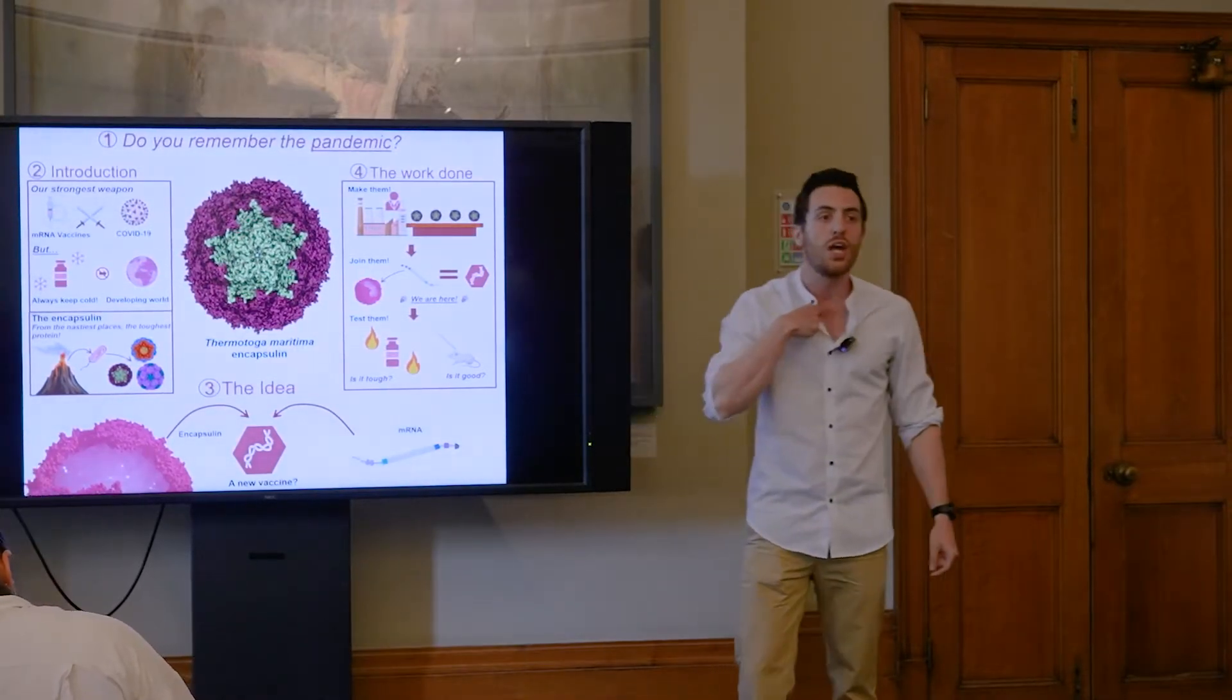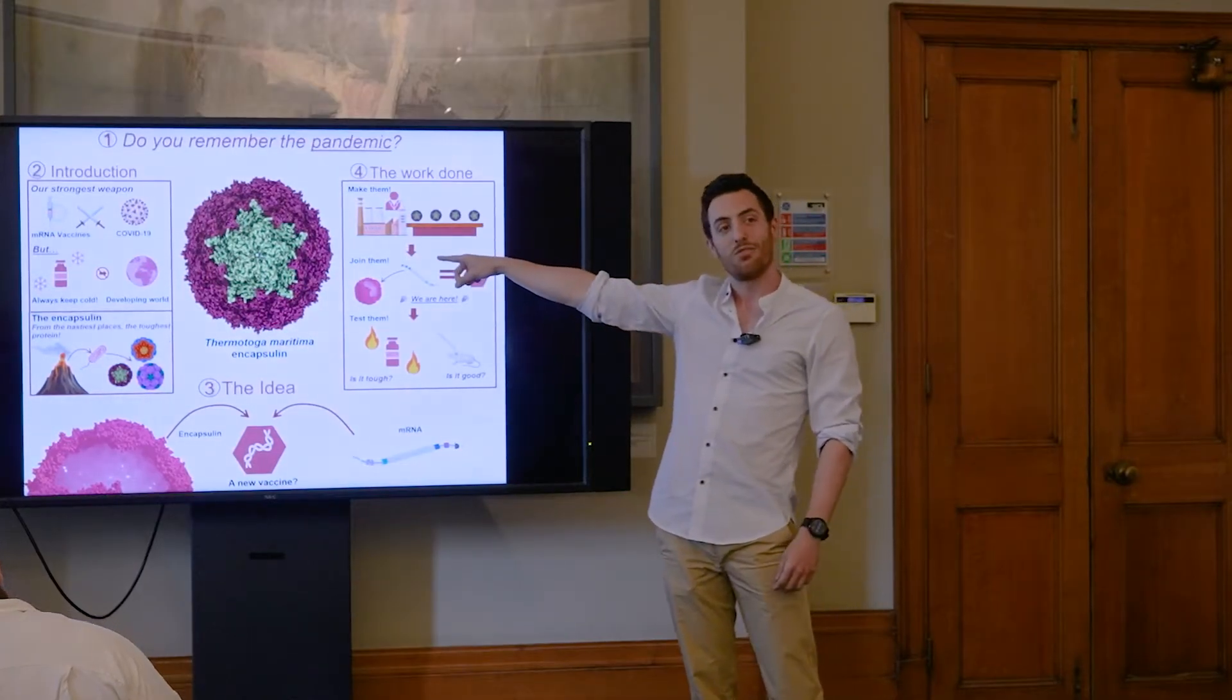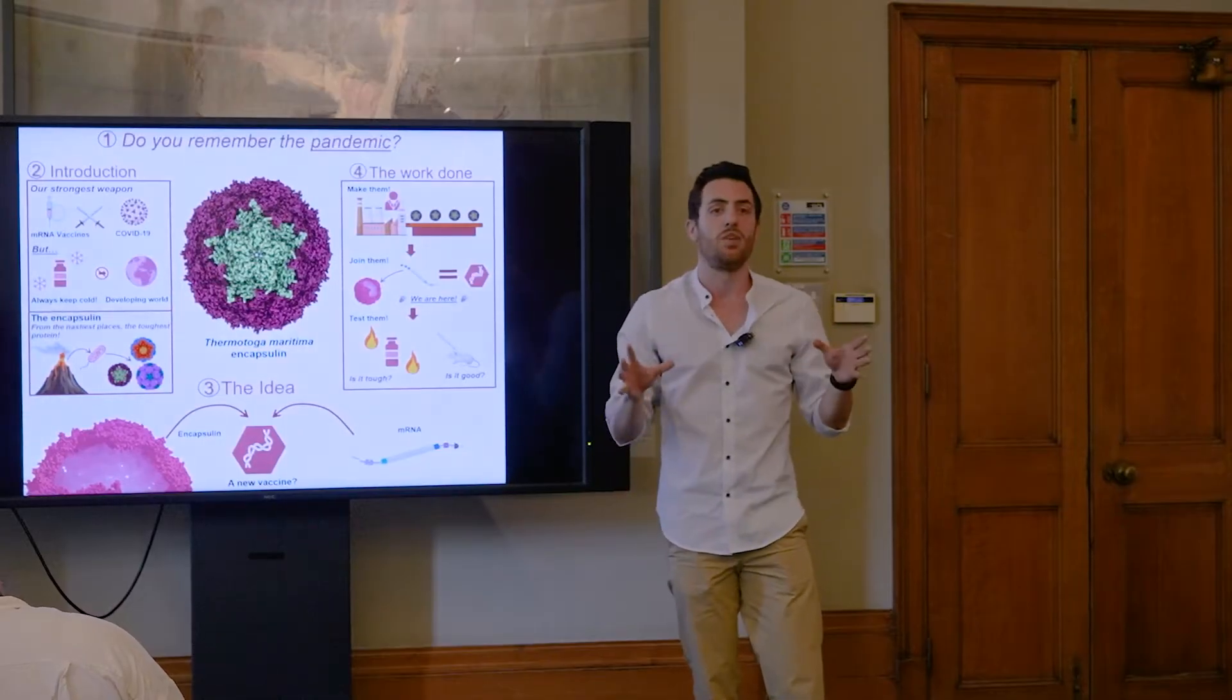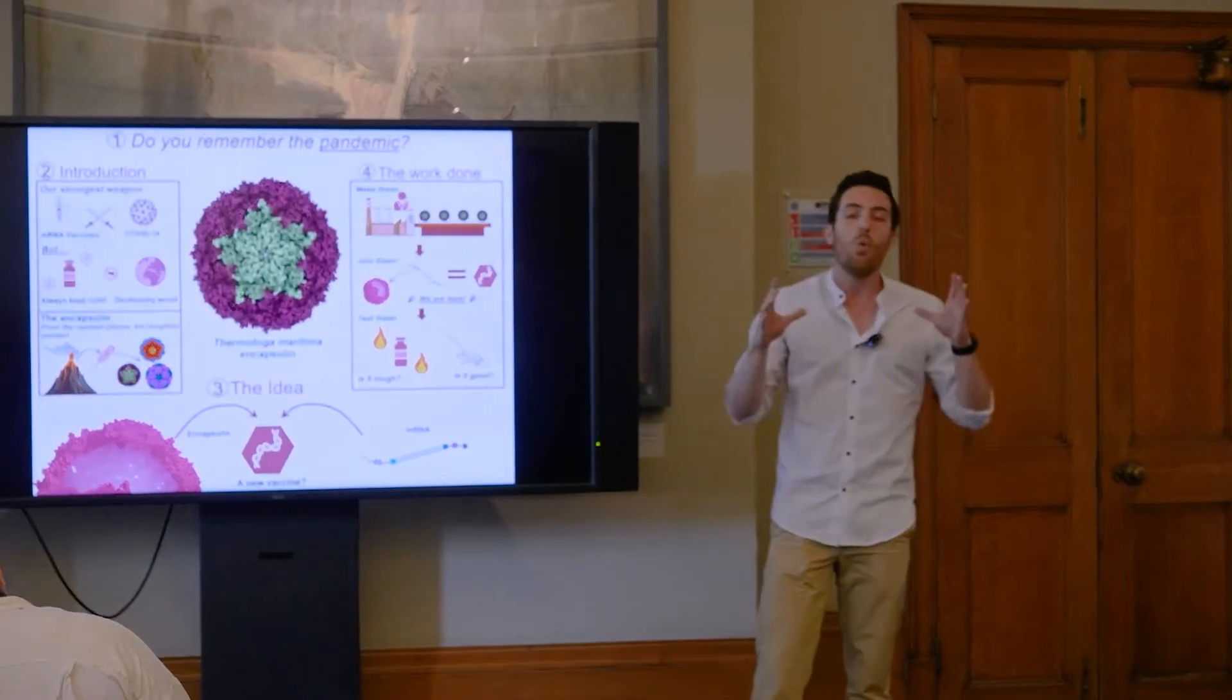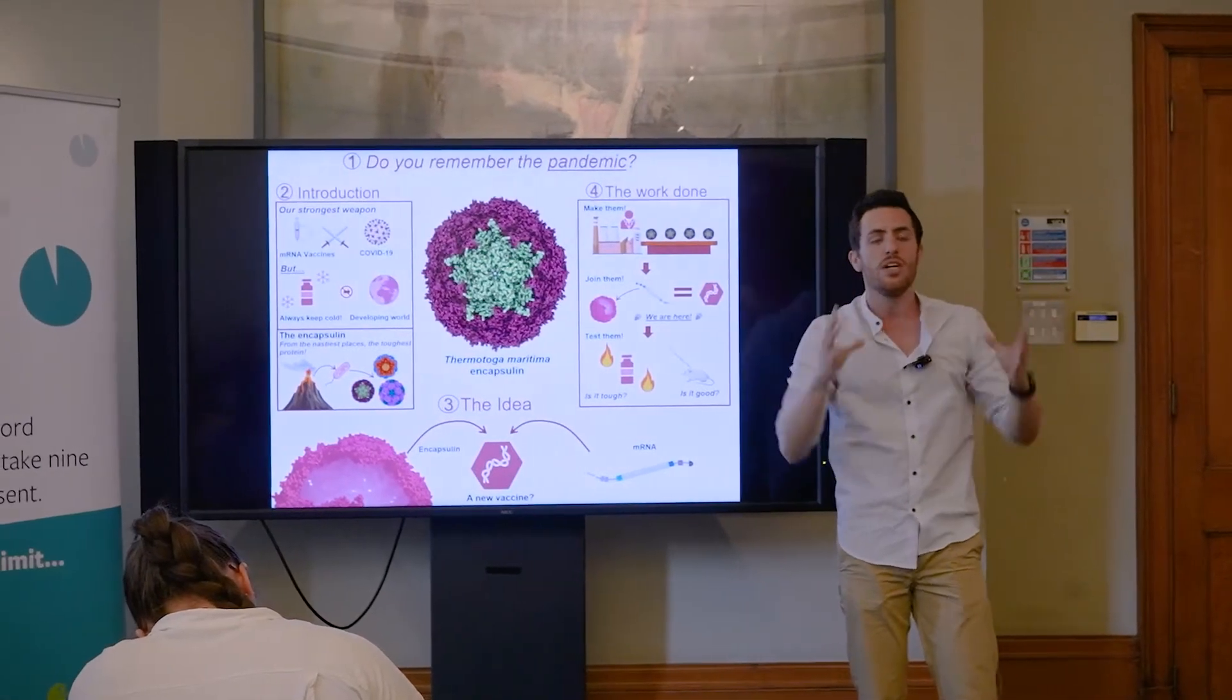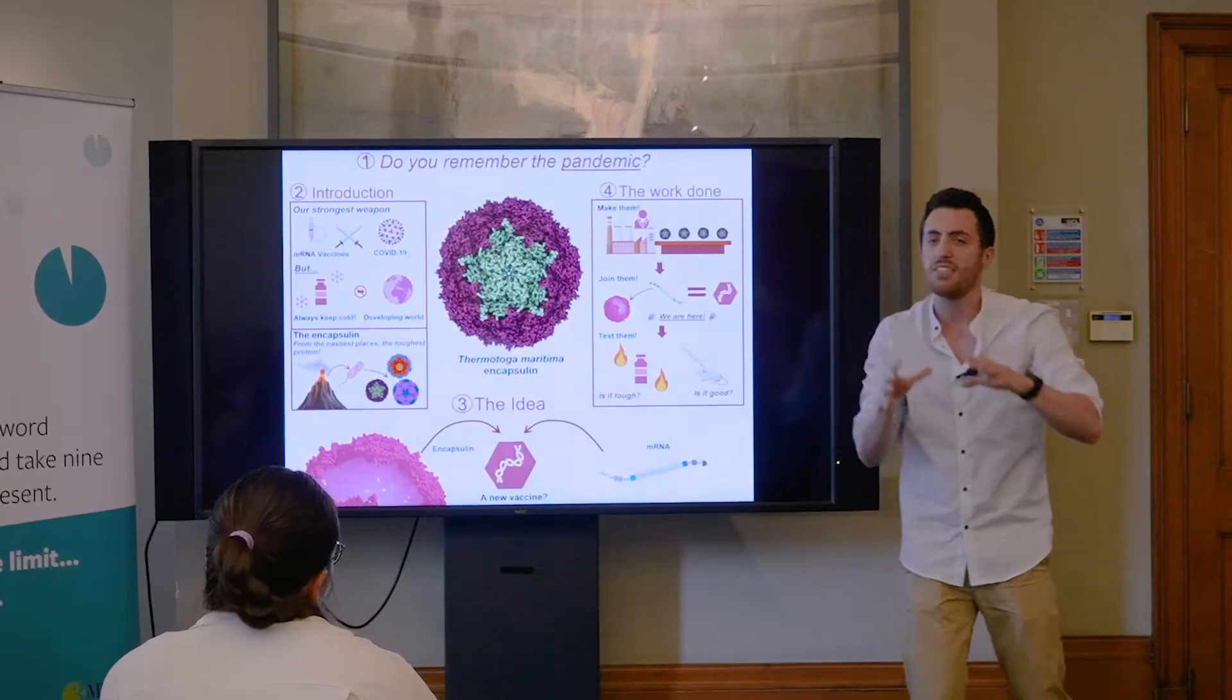Imagine how many lives could have been saved if we had a better version of this vaccine. This is what I want to change. And my solution may come from the nice little protein that you see at the center of my screen. That one, ladies and gentlemen, is known as encapsulin. And if you're wondering what it is, simply put, encapsulin is just a box, a container, something that you can open up, put stuff on the inside, and that stuff stays there, protected.